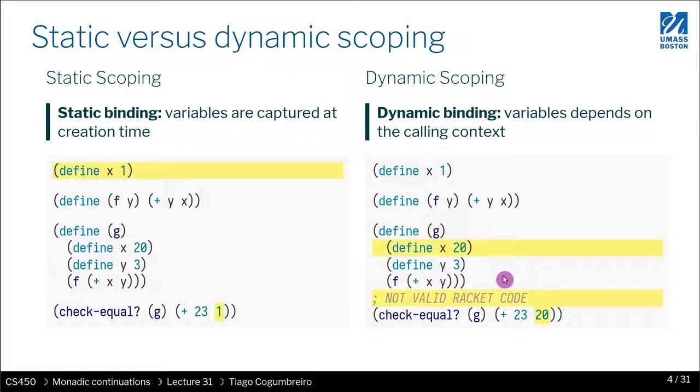all variables become global. So if I define x to be 20 and y to be 3, then in this code, what I'm expecting is when I read the value of x, I need to ask myself: what is the closest definition of x at runtime? And that would be x